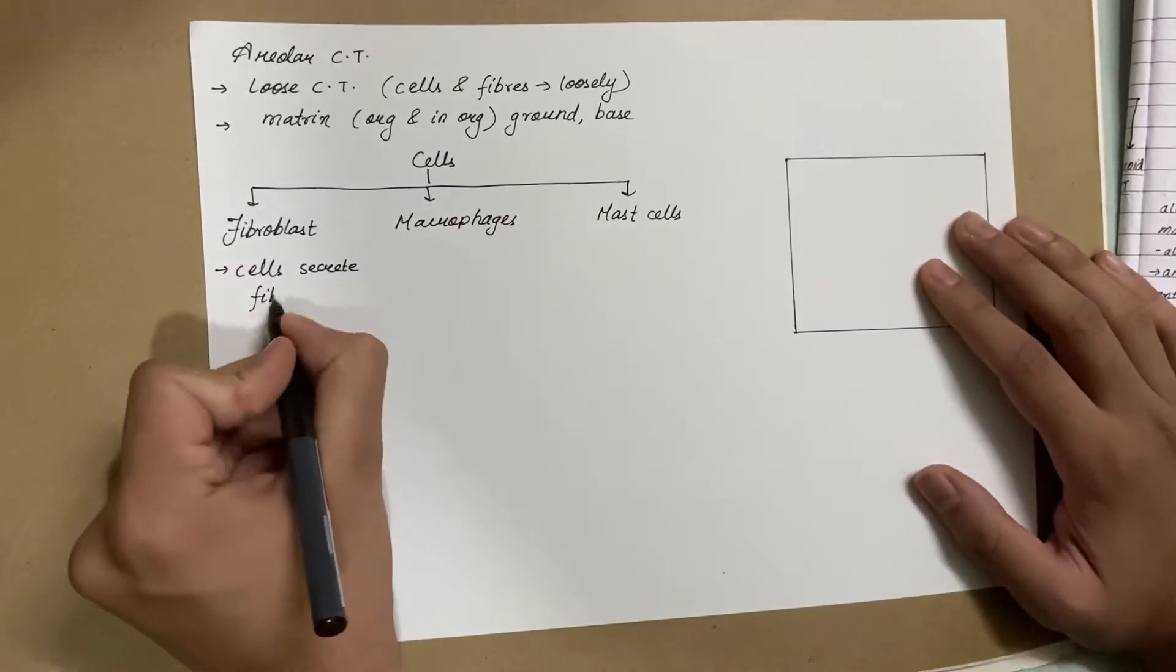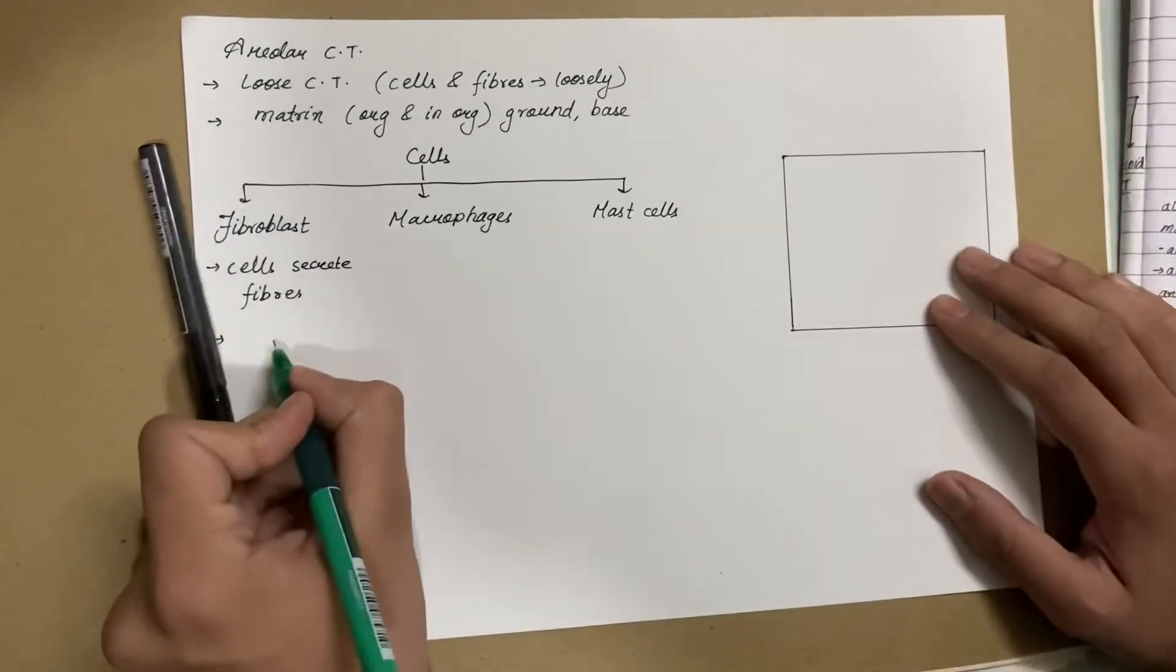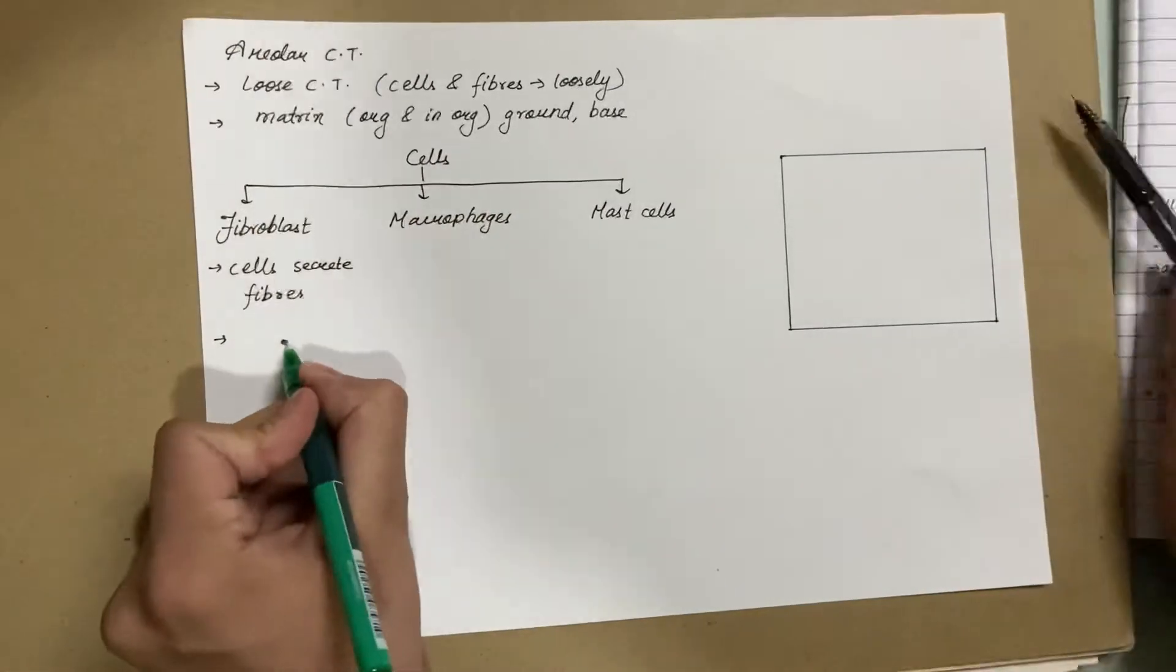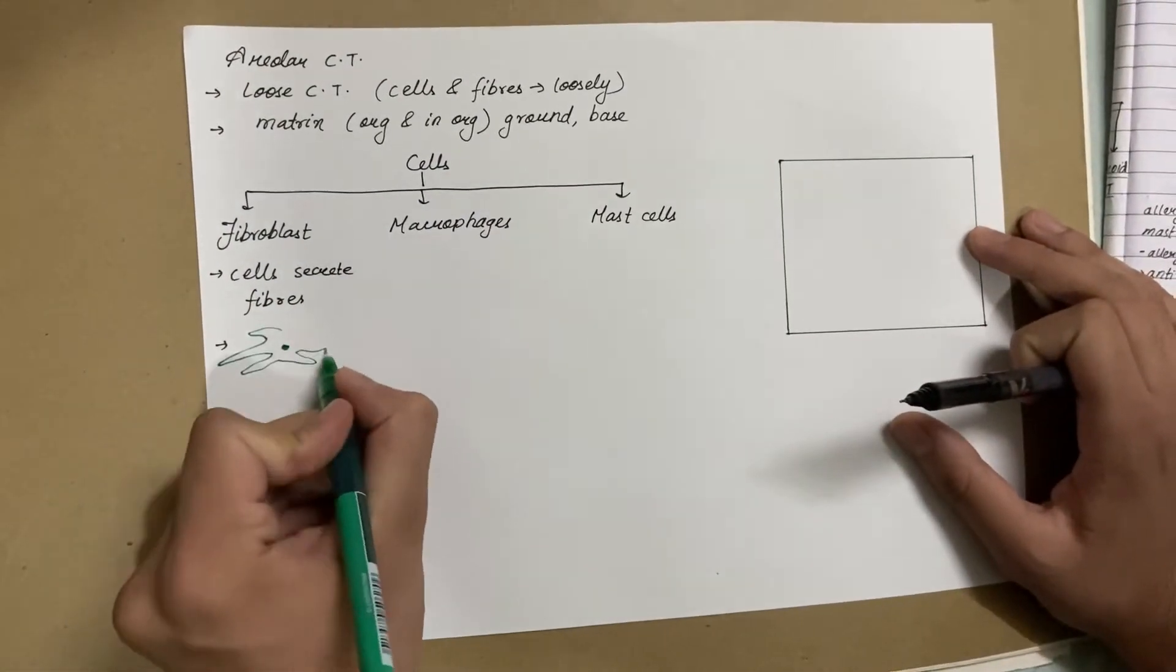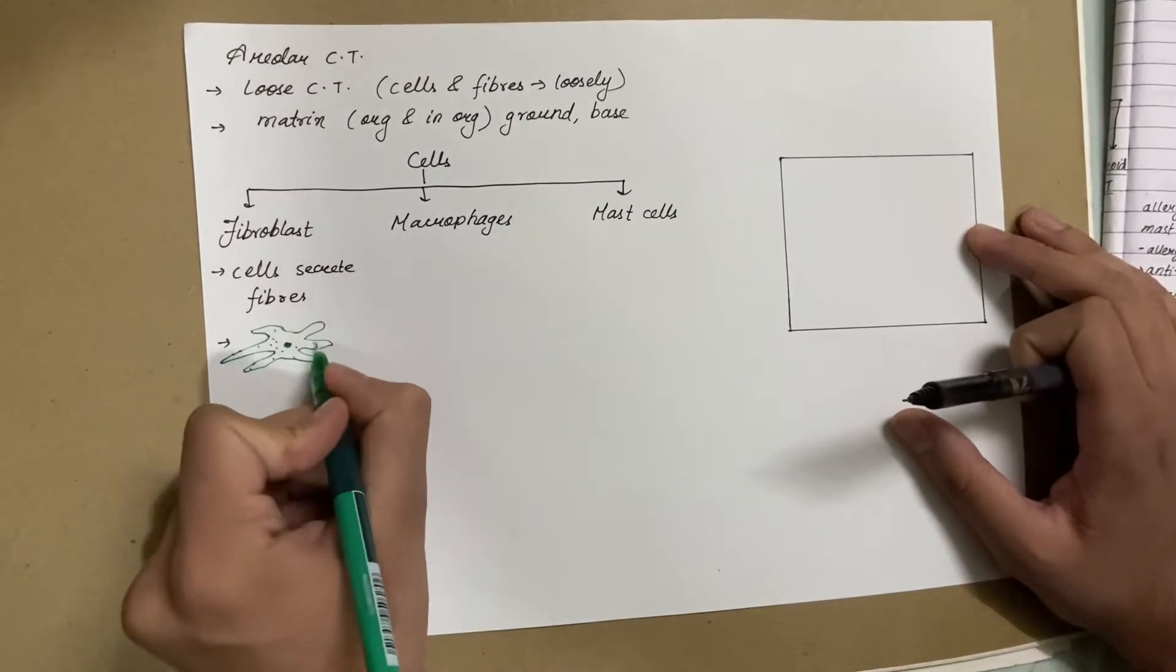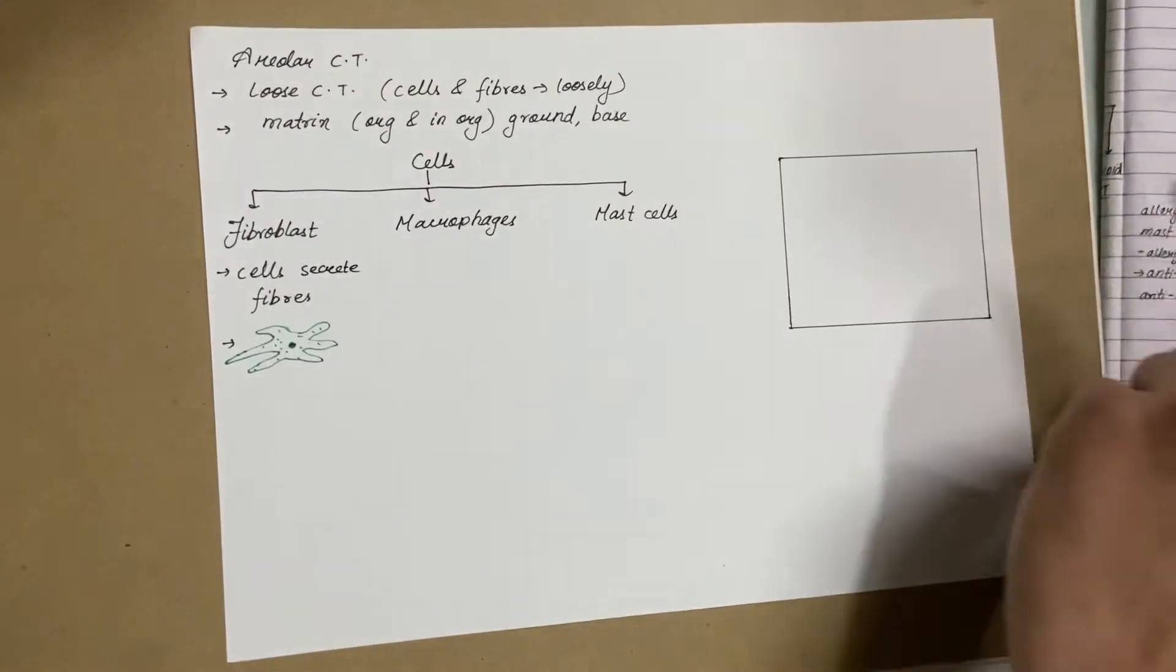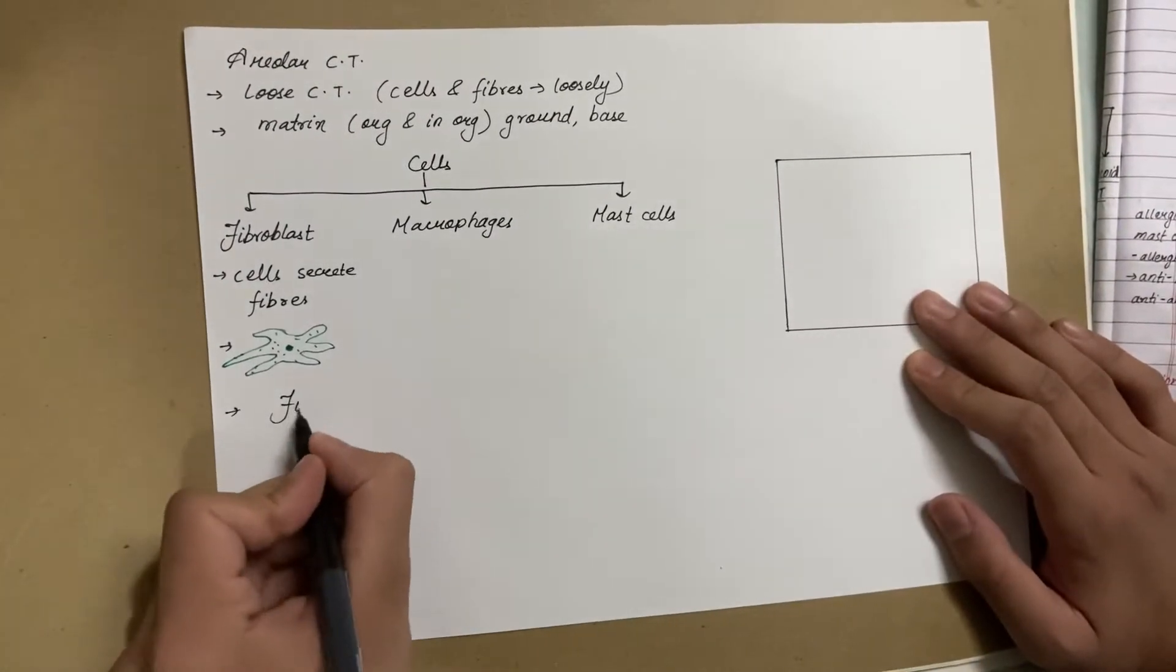Now the special feature about these fibroblasts is that their cell consists of a prominent nucleus with long protoplasmic processes. As you can see right here, there's the nucleus which is surrounded by cytoplasm, and the cytoplasm has long protoplasmic processes.